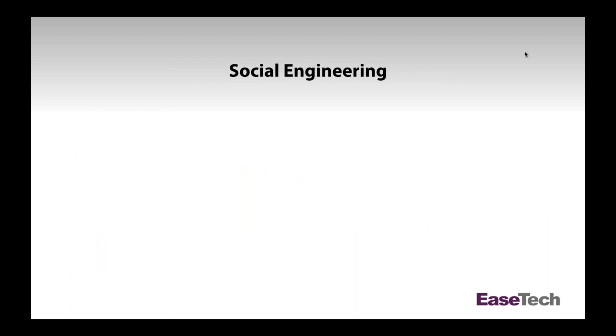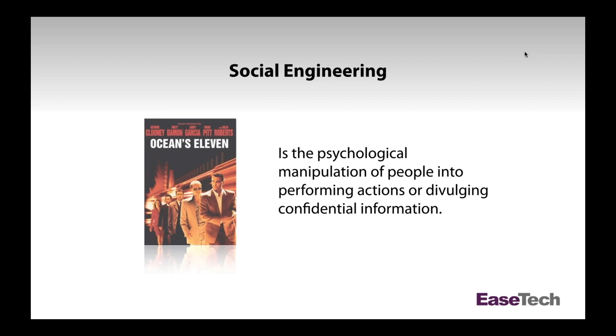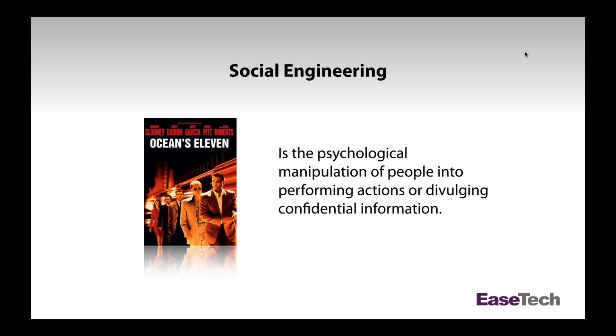This all comes down to one common thing: social engineering. Social engineering is the psychological manipulation of people into performing actions or divulging confidential information. Think of it like the con in the movie Ocean's Eleven — actors performing coordinated actions to steal from a casino — except it's done in a digital manner over email. We want to help you understand what you can do to avoid being socially engineered by cyber criminals.